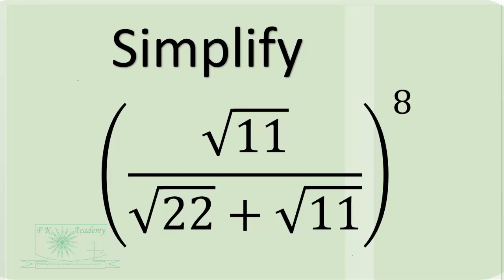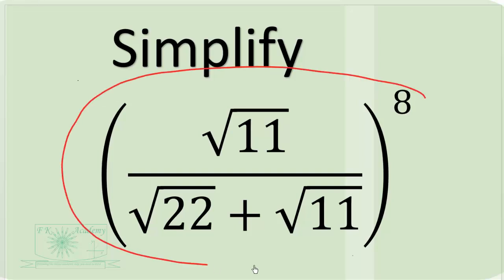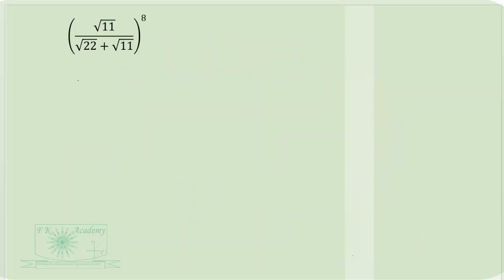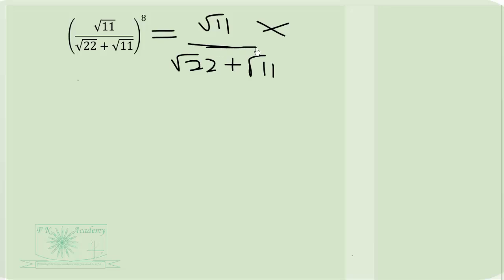Can we simplify this radical expression here? Let's see what we can do. First, we rationalize the denominator. To rationalize the denominator, you multiply both the numerator and the denominator by the conjugate of the denominator. So the conjugate of the denominator is square root of 22 minus square root of 11.